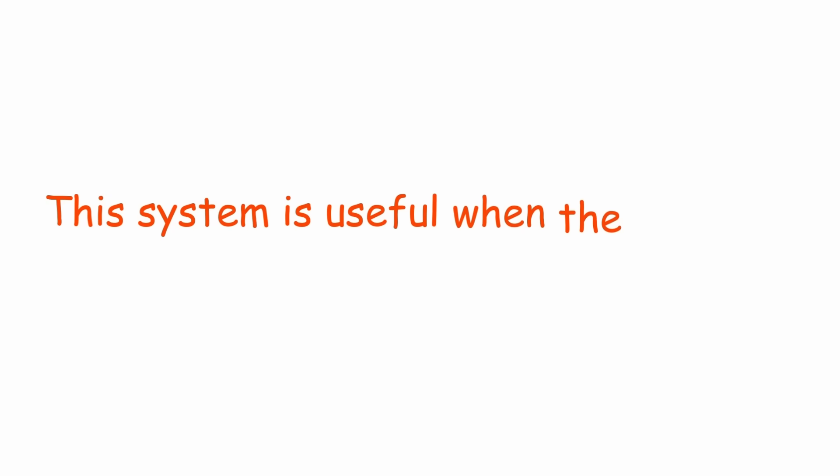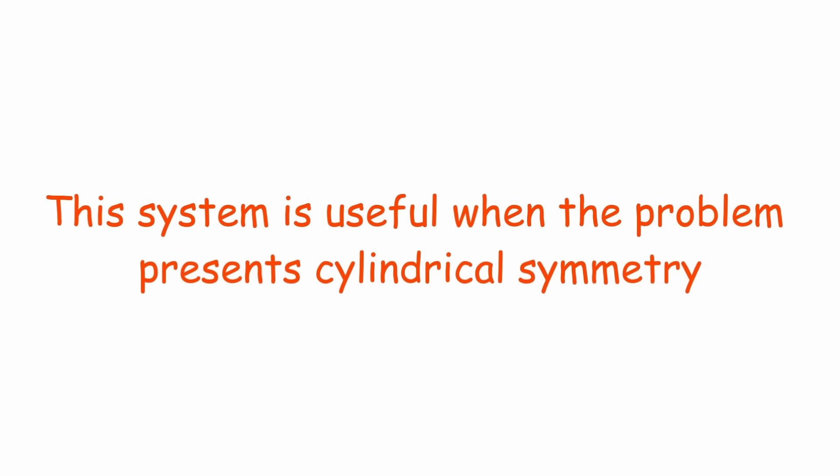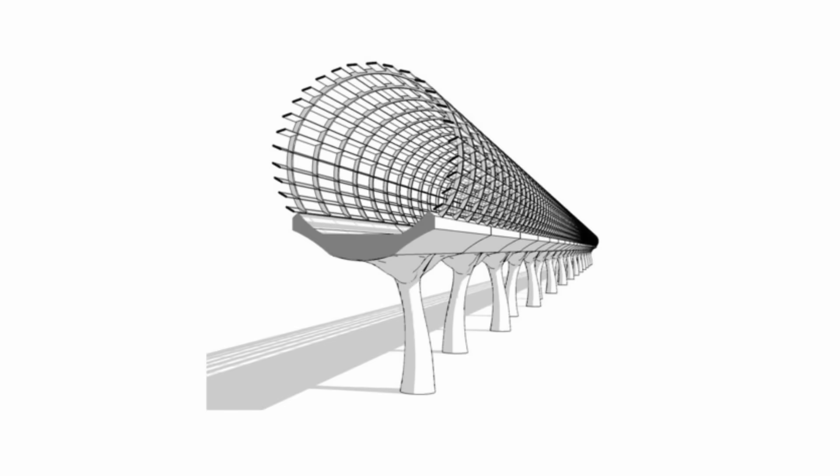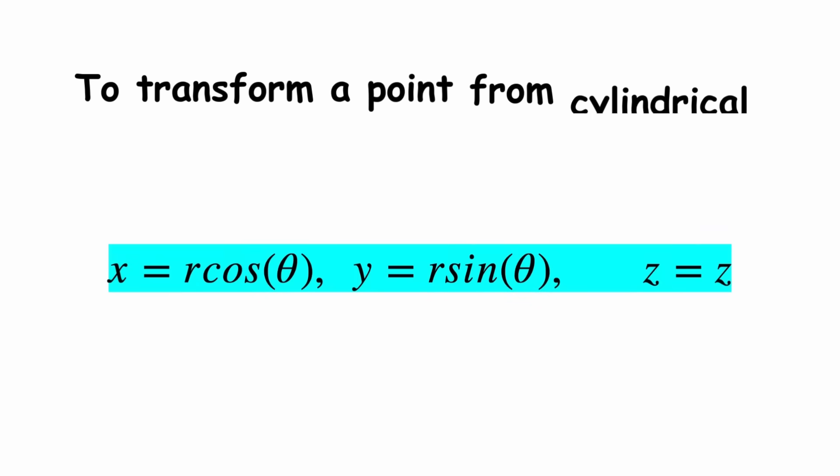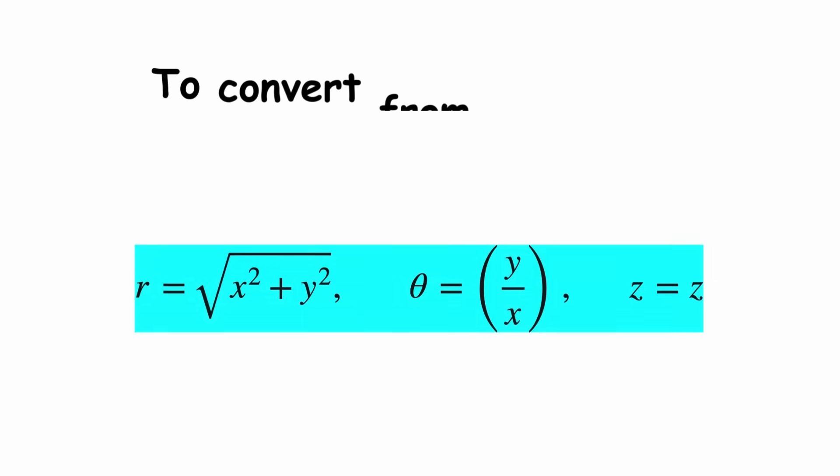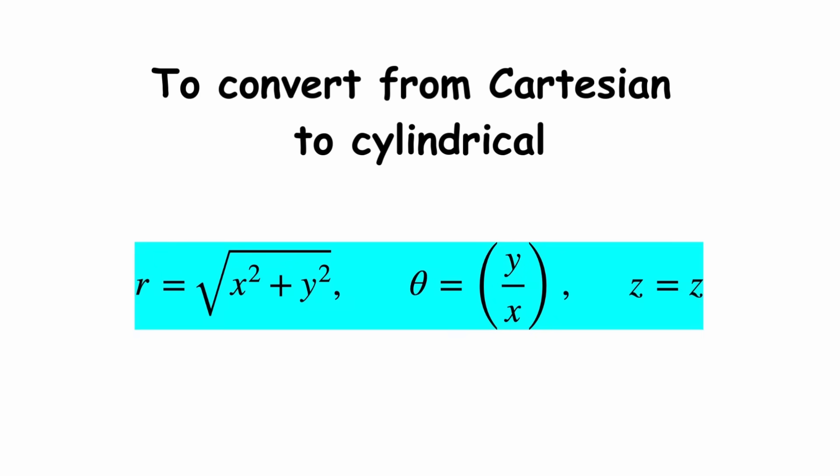This system is useful when the problem presents cylindrical symmetry, as in tubular structures, fluid flows, and electromagnetism. To transform a point from cylindrical to Cartesian and from Cartesian to cylindrical, use the appropriate conversion formulas.